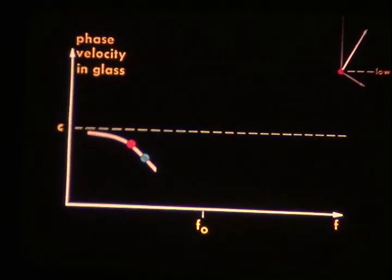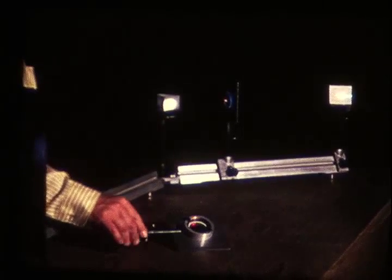Glass refracts blue light more than red light. It has a resonance in the near ultraviolet. If a beam of white light falls obliquely on a glass surface, blue is bent more than red.